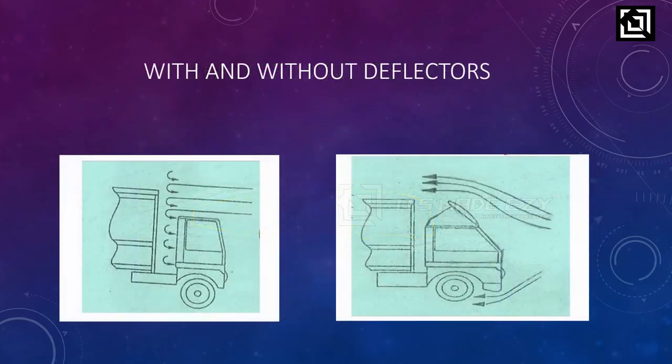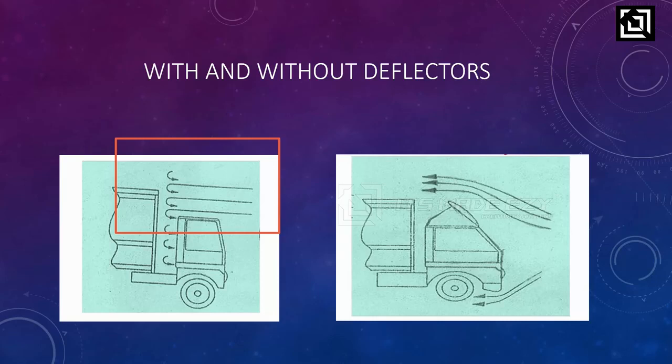We will now see the comparison with and without deflectors. First, without deflectors: you can see the air hitting the container and returning back. This creates resistance — the same as air resistance — which increases the energy needed to travel and raises fuel consumption.